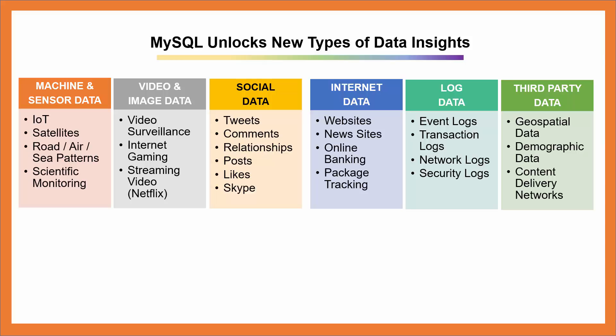The next column shows examples of internet data, such as data from websites, news sites, online banking, and package tracking. The next column shows examples of log data, such as event logs, transaction logs, network logs, and security logs. And the last column gives examples of third-party data, such as geospatial data, demographic data, and content delivery networks.